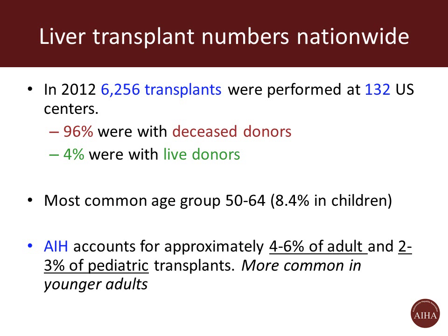In terms of numbers, from the 2012 SRTR — the national database for liver transplant outcomes in the U.S. — a little over 6,000 transplants were performed at 132 centers nationwide. The vast majority were from deceased donors, 4 percent from live donors. The most common age group is 50 to 64, but with AIH, which affects children, there's a shift to younger age groups. About 8.4 percent of transplants are pediatric.